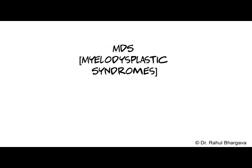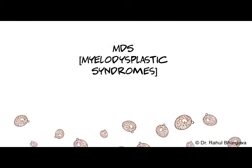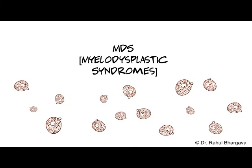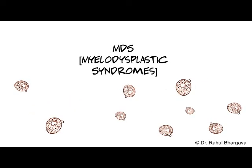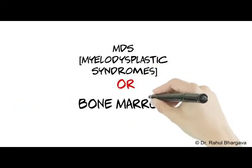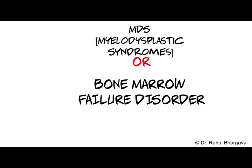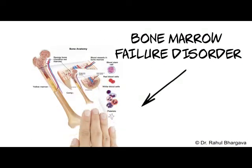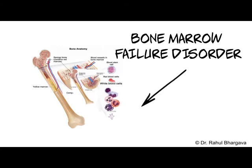MDS, the disease. MDS or Myelodysplastic syndromes is a blood disorder that causes a drop in the number of healthy blood cells. It is sometimes also referred to as bone marrow failure disorder. The bone marrow is a soft gelatinous tissue found in bones and is responsible for producing red blood cells that carry oxygen around the body, white blood cells that help fight infection, and platelets that help our blood to clot.